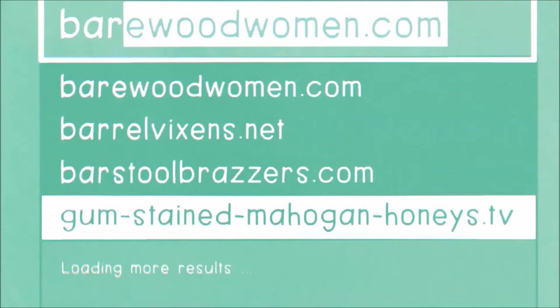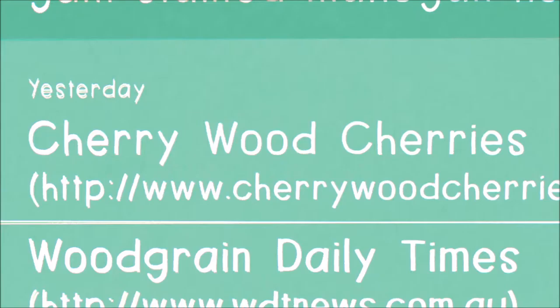And the result below that is gum-stained mahogany honeys. Huh? That's weird. Cherrywood cherries? Oh, that's the new table I wanted to get.